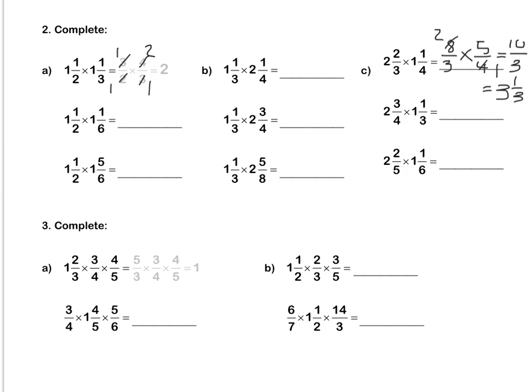Question 3. We have 3 fractions now. We rewrite 1 and 2 thirds as an improper fraction first. Rewrite the whole sum so that you can simplify nicely. We can divide 3 and 3 by 3. Then 5 and 5 we divide top and bottom. And lastly, 4 and 4. So we are left with 1 whole. Press pause to complete question 3.